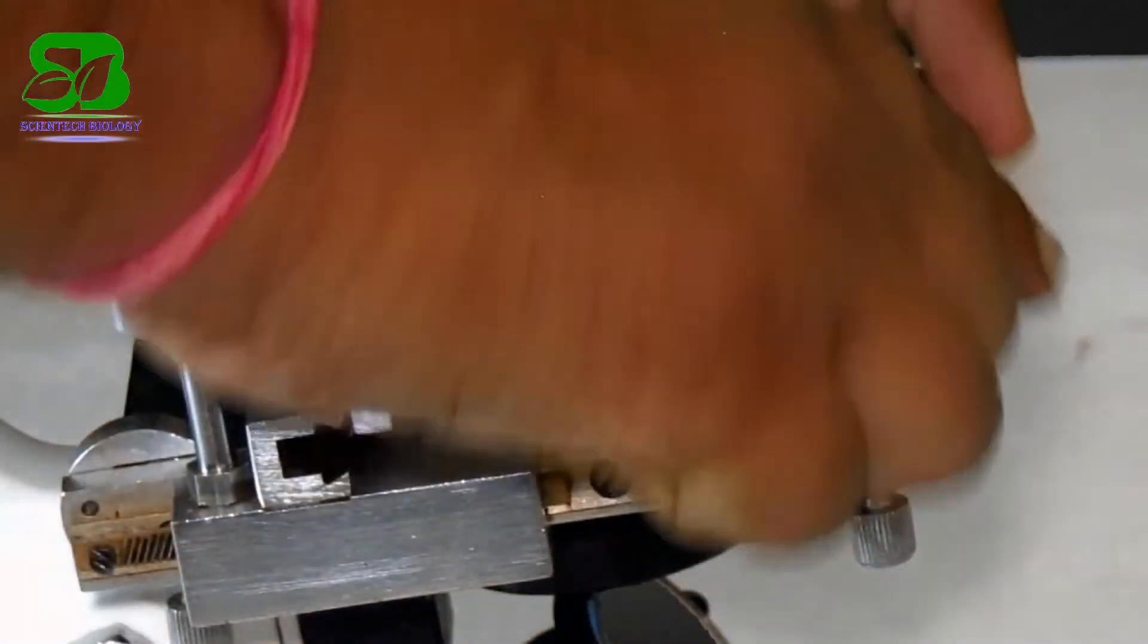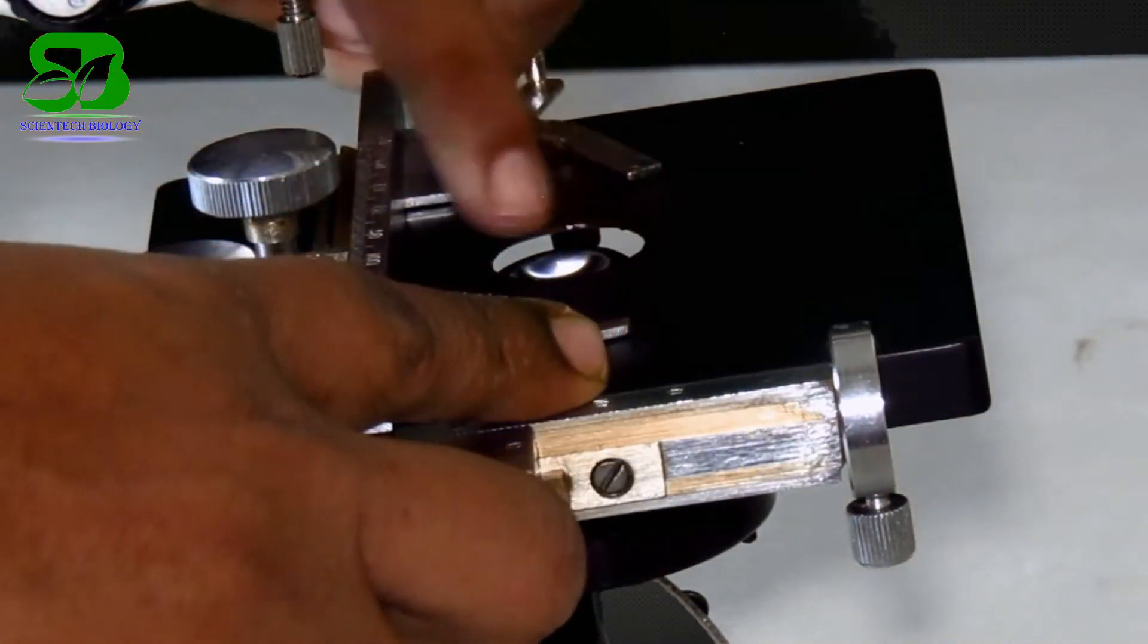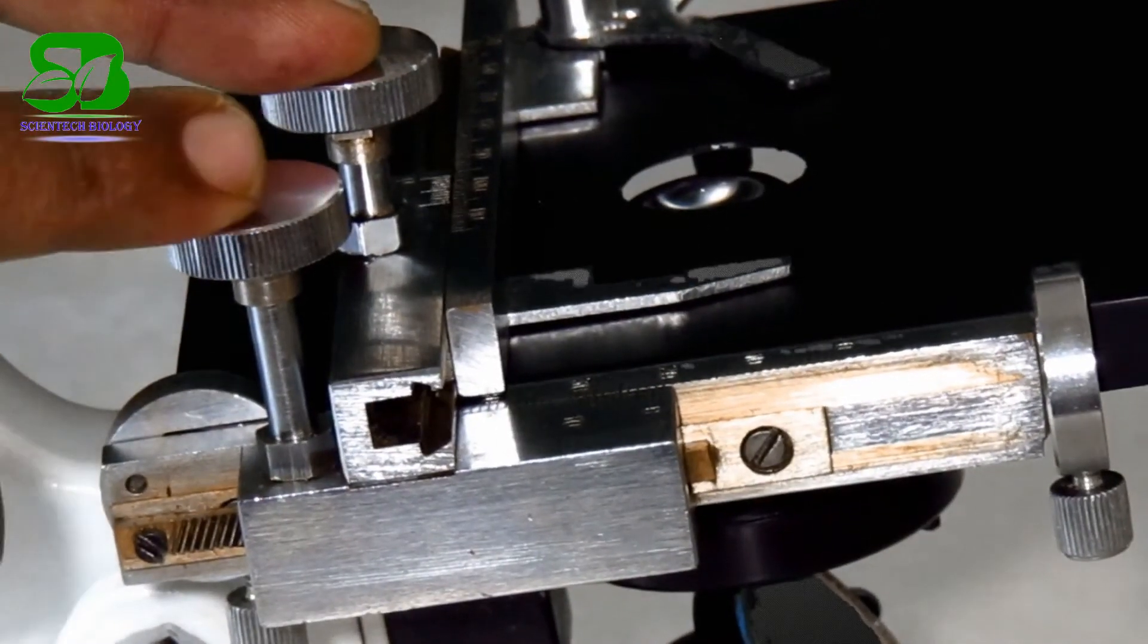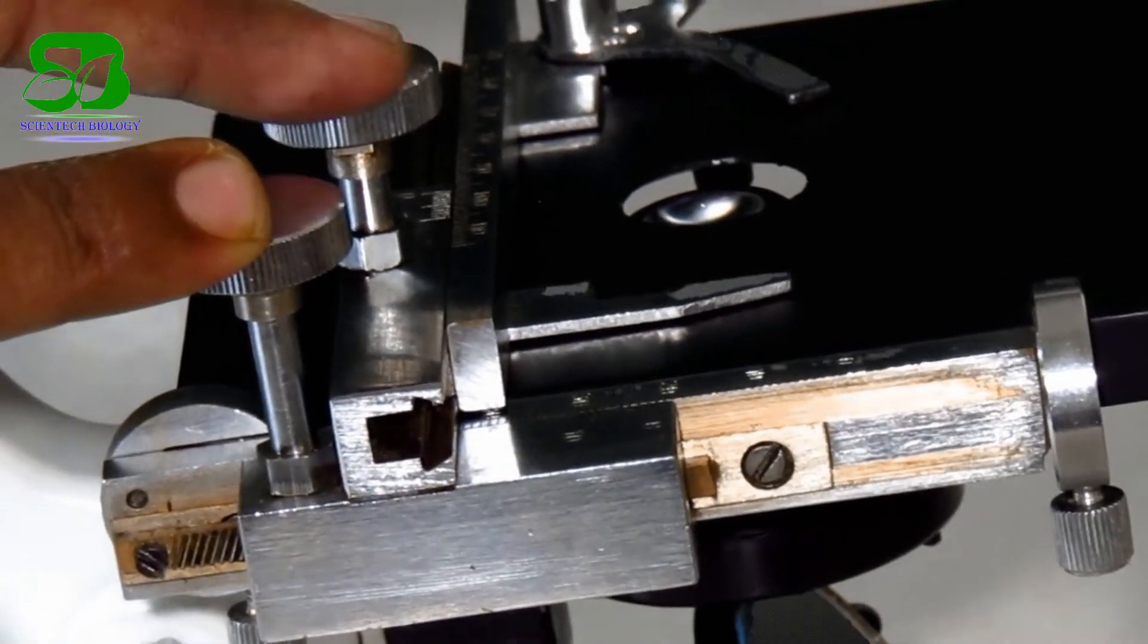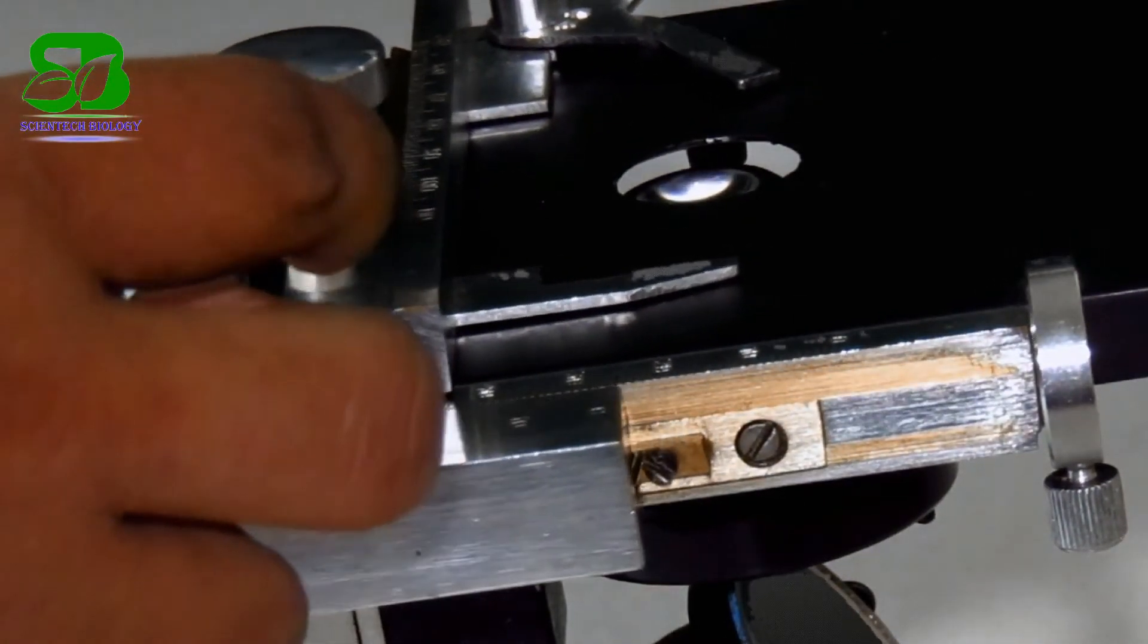This flat square platform having a circular hole at the center is the stage. Here the two mechanical clips hold the slides. You can adjust the clips by rotating them clockwise or anti-clockwise.